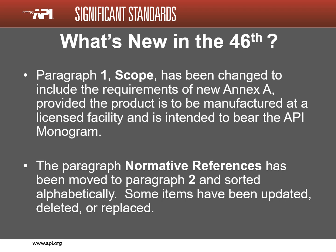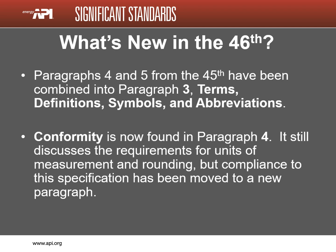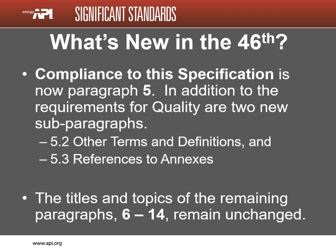The topics in paragraphs 1 through 5 have minor changes. The scope now includes the requirements of new Annex A, provided the product is to be manufactured in an API licensed facility with the intent to bear the monogram. The paragraph on normative references has been moved, revised, and re-sorted by title. All the terms, definitions, symbols, and abbreviations have been combined into paragraph 3, and conformity is now found in paragraph 4. Compliance to the specification is now in new paragraph 5, and the new paragraph contains two new subparagraphs: other terms and definitions, and references to annexes. The titles and topics of the remaining paragraphs 6 through 14 remain unchanged.